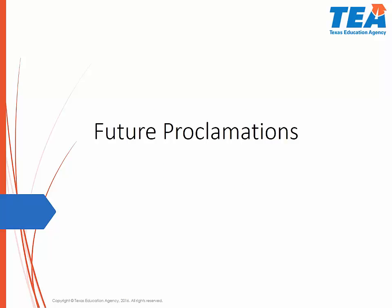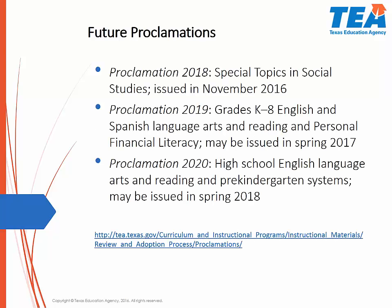Future Proclamations: In November of 2016, the State Board of Education issued Proclamation 2018 for special topics in Social Studies. Proclamation 2019 may be issued in the spring of 2017 and would include English and Spanish language arts and reading for grades K-8 and personal financial literacy. Proclamation 2020 may be issued in the spring of 2018 and would call for materials for high school English language arts and reading and pre-K systems.